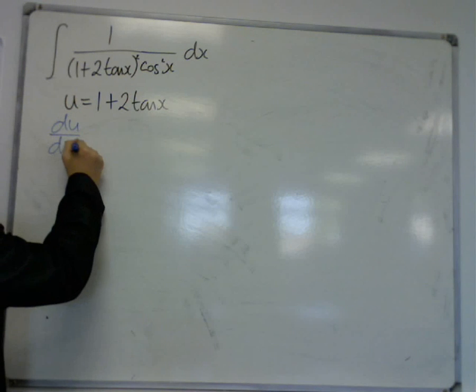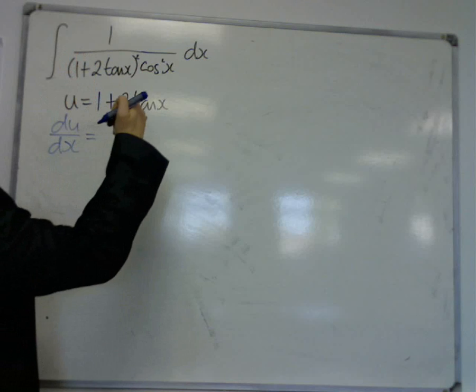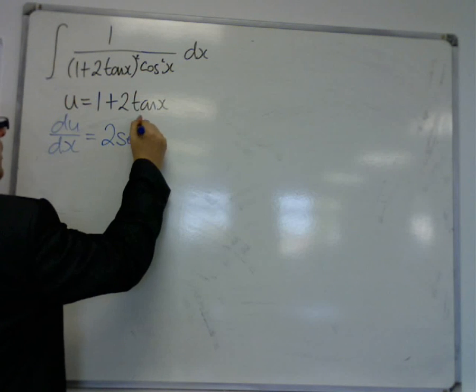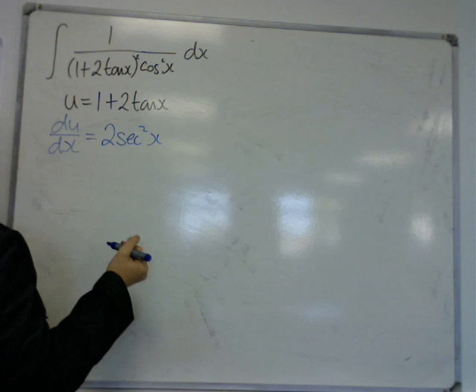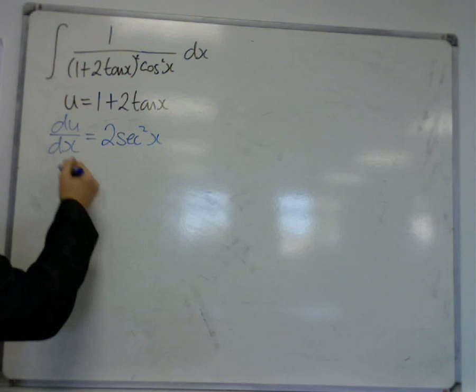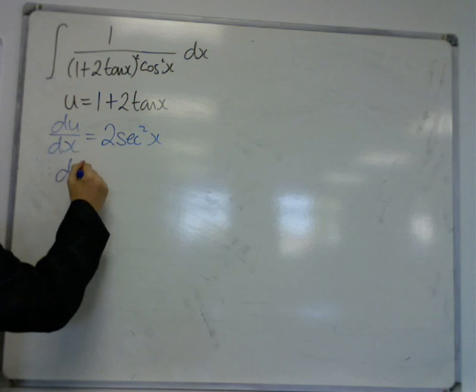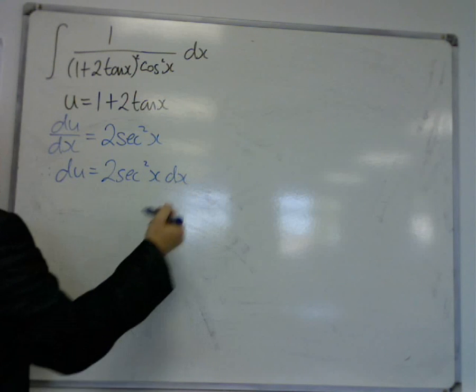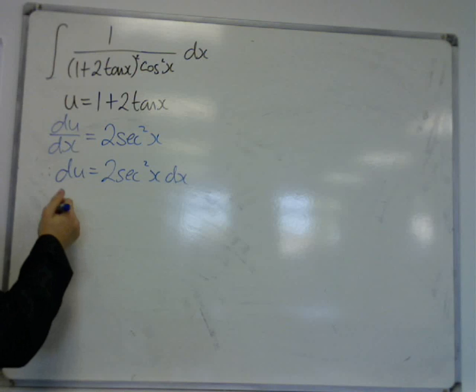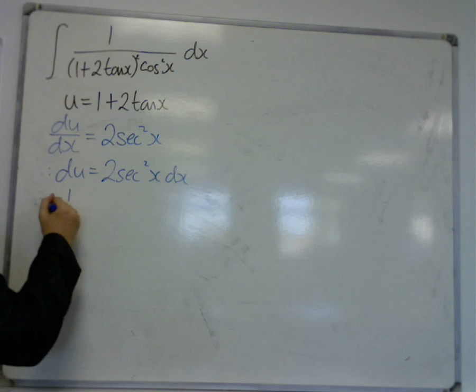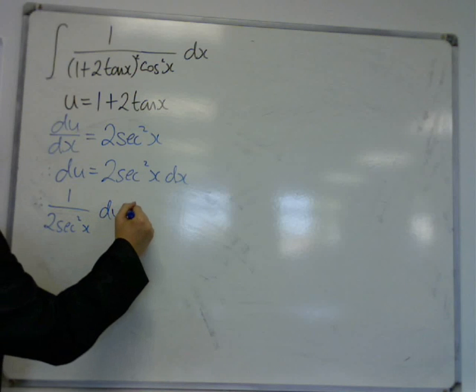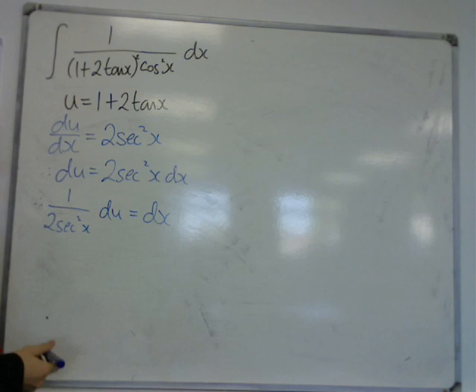So, du by dx. Now, the derivative of tan is sec squared. So, that's 2 sec squared x. So, multiply both sides by dx. And then divide both sides by 2 sec squared.